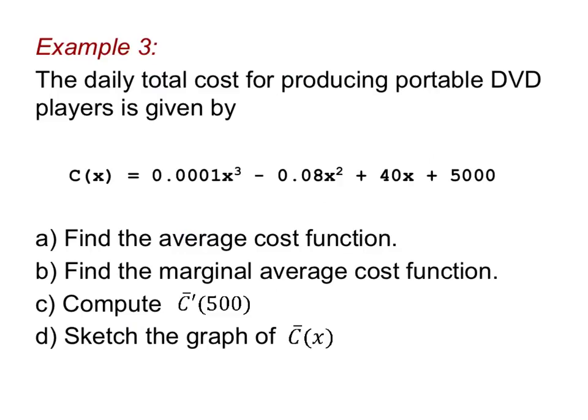Let's try an example. In example 3, the daily total cost for producing portable DVD players is given by the function C(x) = 0.0001x³ - 0.08x² + 40x + 5000. Notice we've graduated from widgets to DVD players. Our job is to find the average cost function, the marginal average cost function, and then compute the marginal average cost at a production level of 500, and also sketch the graph of that average cost function.